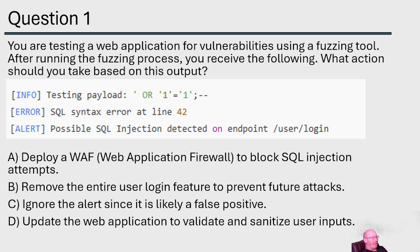You are testing a web application for vulnerabilities using a fuzzing tool. After running the fuzzing process, you receive the following output — an SQL syntax error at line 42, possible SQL injection detected on endpoint. What action should you take based on this output?